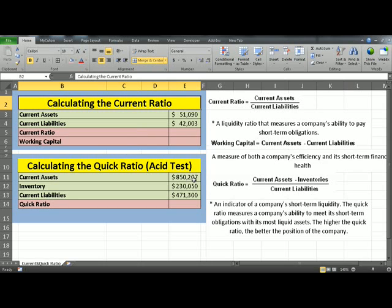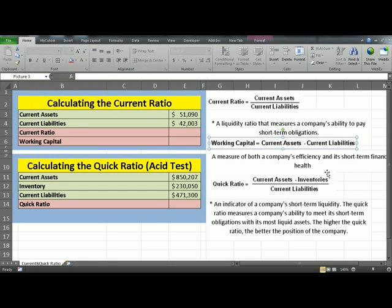First of all, the Current Ratio. Current Ratio is basically a liquidity ratio that measures a company's ability to pay its short-term obligations. This is the formula. Sorry, this is the formula, Current Ratio.